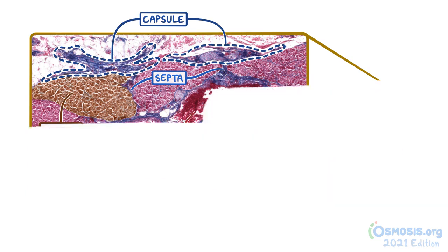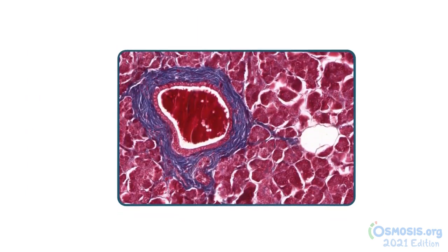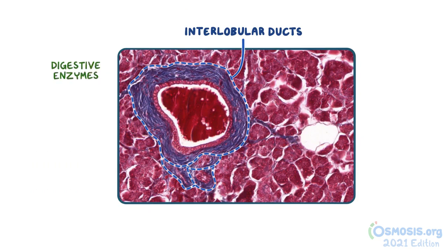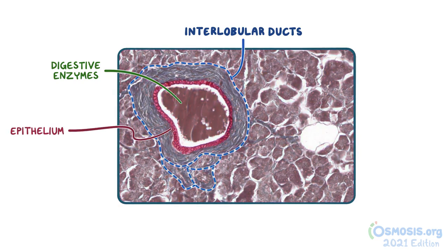Azin stain will also stain the connective tissue surrounding the interlobular ducts a similar color, but these ducts can be differentiated from the blood vessels by the presence of digestive enzymes instead of red blood cells within their lumen, as well as their distinct epithelium that lines the lumen.